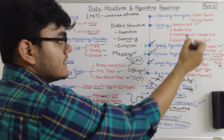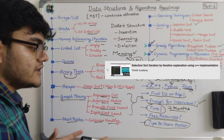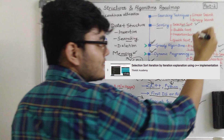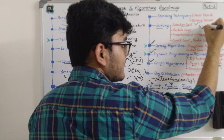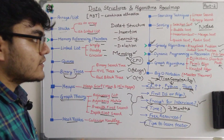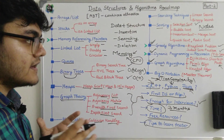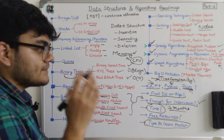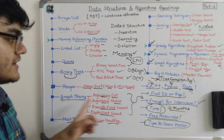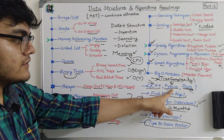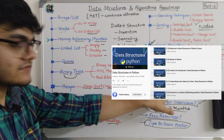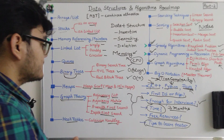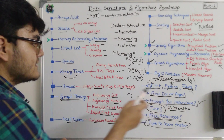Some tips to learn these concepts and remember them forever: when you start the playlist and you're learning a topic — say selection sort — watch the video and at the same time make sure you take notes. Write all the important points and if possible write out the whole algorithm in your notes. I've also included the implementation of all of them in C++.